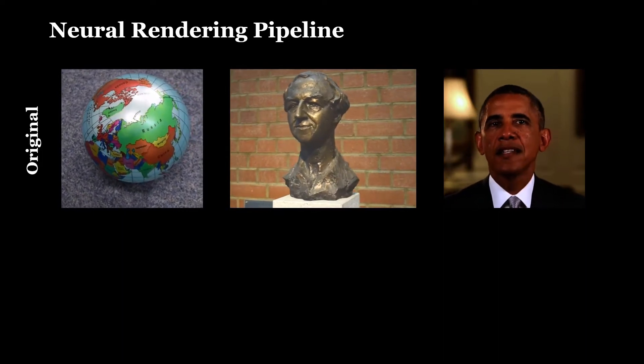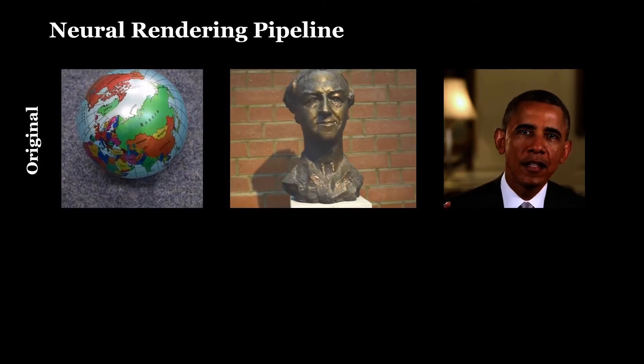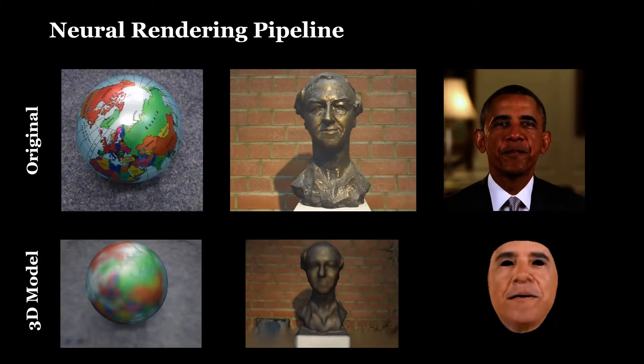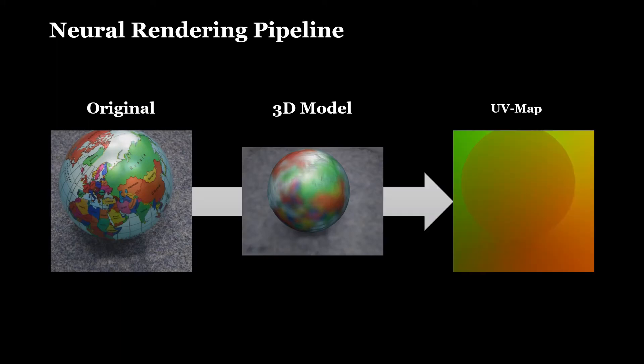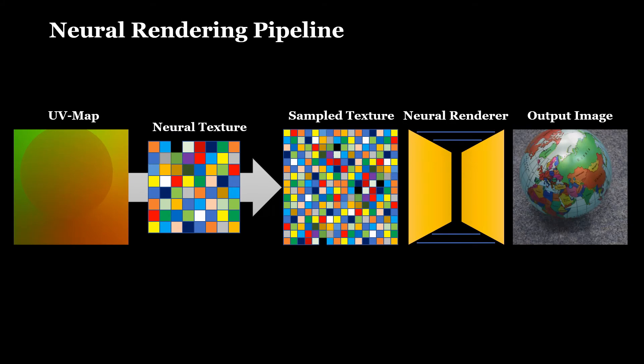Based on video footage of a target object, we estimate its 3D geometry. This geometry is coarse and not suited to be processed by the standard graphics pipeline to achieve photorealistic images. Given a 3D model, we parameterize its surface using a UV atlas. Using the standard rasterizer, we draw corresponding UV maps of the object to the image space. This UV map is input to our method.